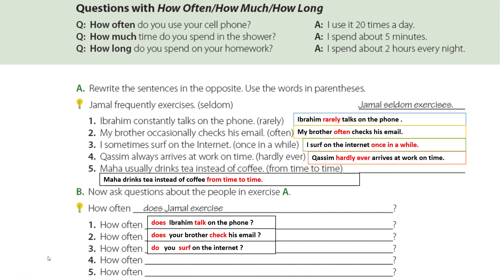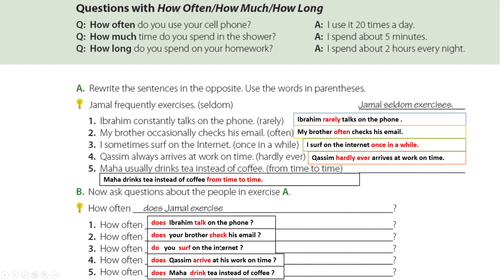Number four: 'Qasim arrives at work on time' — 'How often does Qasim arrive at work on time?' Number five: 'Maha usually drinks' — 'How often does Maha drink?' — without 's' because it's a question. Note: in a sentence, the verb takes 's' for the third person; in a question preceded by 'does,' no 's' is added — 'does' is enough.